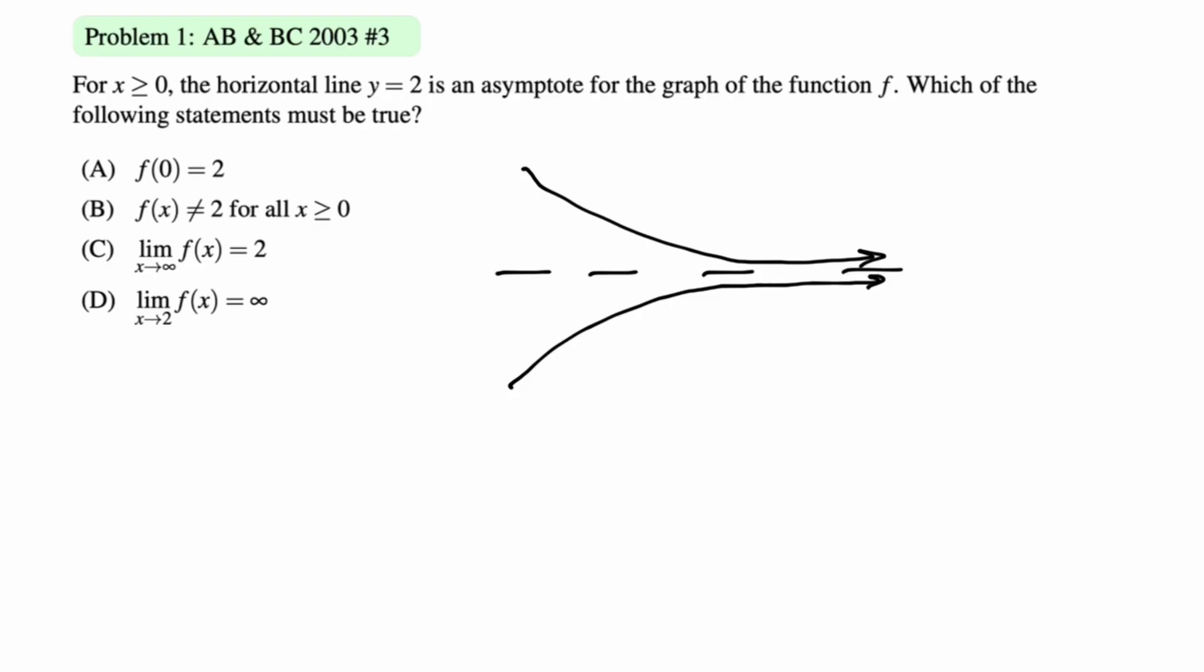The limit as x approaches infinity of f of x is equal to 2, that's literally the definition of a horizontal asymptote. This is definitely the answer. And then the limit as x approaches 2 of f of x is infinity, that's the definition of a vertical asymptote. So the answer here is c. You just want to think about these things. I think sketching a figure is always really helpful with these types of problems. Let's look at the next one.